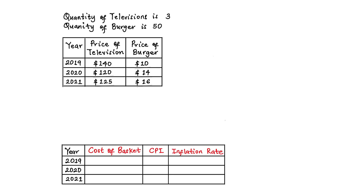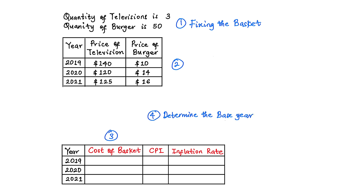In this video we will be discussing how to calculate the inflation rate using the Consumer Price Index (CPI). There are six steps to the calculation of the inflation rate using the CPI. Step 1 is fixing the basket. Step 2 is to determine the prices of each year. Step 3 is to calculate the cost of the basket. Step 4 is to determine the base year. Step 5 is to calculate the CPI of each year. Step 6 is to calculate the inflation rate using the CPI.